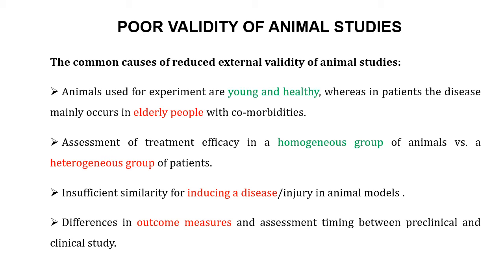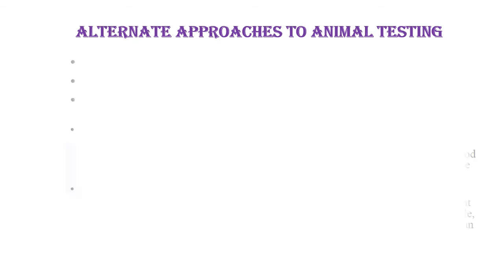Even if an animal produces positive effects, there is no guarantee it will produce the same effects in humans. Animals used in experiments are young and healthy, whereas patients are typically elderly — this difference may reduce the validity of the study. Assessment of treatment efficacy in a homogeneous group of animals versus a heterogeneous group of patients, and insufficient similarity in inducing disease, also shows the limited validity of animal studies.